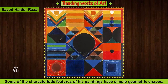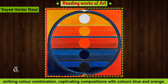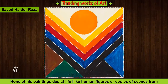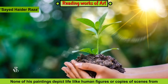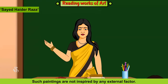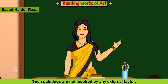Some of the characteristic features of his paintings include simple geometric shapes, striking colour combinations, and captivating compositions with colours blue and orange. None of his paintings depict lifelike human figures or copies of scenes from his environment. His paintings belong to the abstract style.